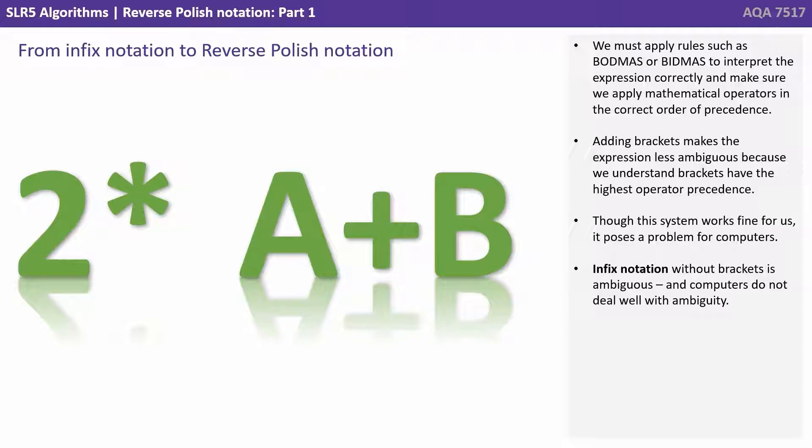We must apply rules that we're taught in school, such as BODMAS or BIDMAS, to interpret the expression correctly and make sure we apply mathematical operators in the correct order of precedence. Adding brackets makes the expression less ambiguous, because we understand brackets have the highest operator precedence. Though this system works fine for us, it poses a problem for computers. Infix notation without brackets is by nature ambiguous, and computers do not deal well with ambiguity.